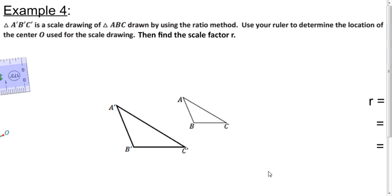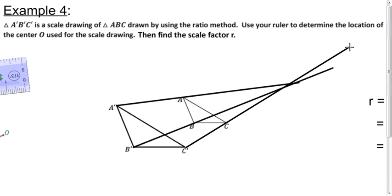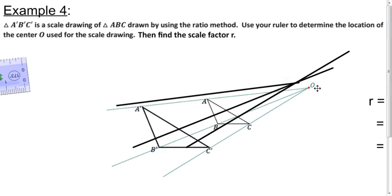Now, given an existing scale drawing, how do we figure out where the center is and find the scale factor? To find the center, we know that each point is mapped to its corresponding point in the image by moving along a ray that emanates from the center. So if we draw lines through all the corresponding points, they should intersect at the center of dilation. We connect A prime to A, B prime to B, and C prime to C — those lines all pass through the same center point O.